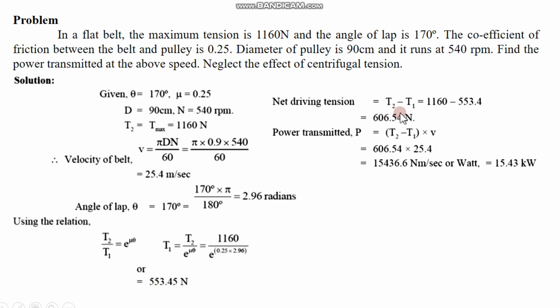So T2 minus T1 is found. Power transmitted formula is (T2 minus T1) into velocity. Substituting the T2 minus T1 value into the velocity gives the result in Newton meters per second, which is Joules per second, which is Watts — and the final answer is in kilowatts. So belt friction problems are very simple.